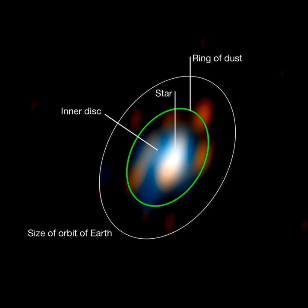Astronomical interferometers can produce higher resolution astronomical images than any other type of telescope. At radio wavelengths, image resolutions of a few micro arcseconds have been obtained, and image resolutions of a fractional millisecond have been achieved at visible and infrared wavelengths. One simple layout of an astronomical interferometer is a parabolic arrangement of mirror pieces, giving a partially complete reflecting telescope but with a sparse or dilute aperture.